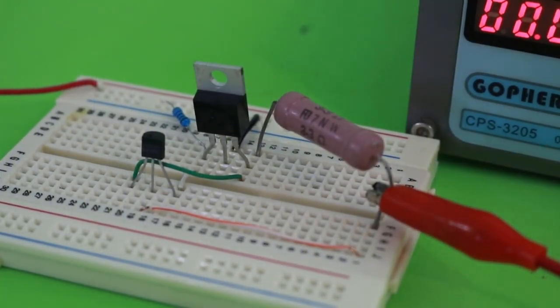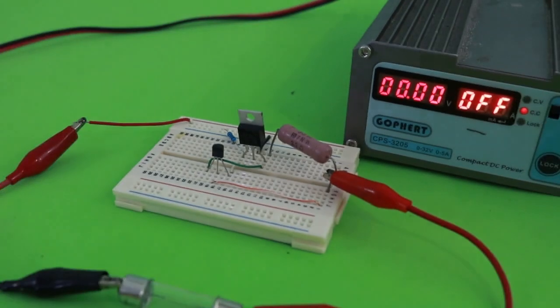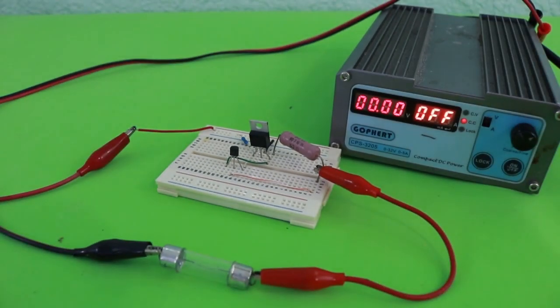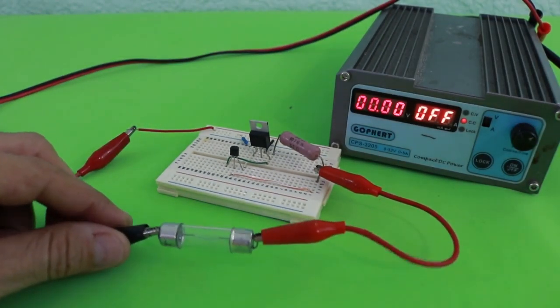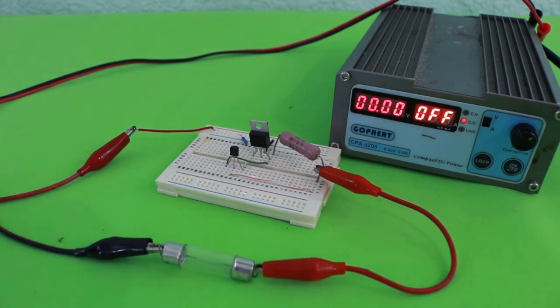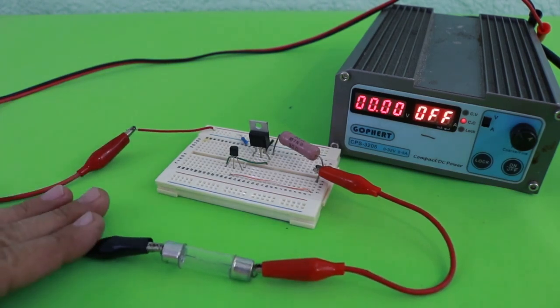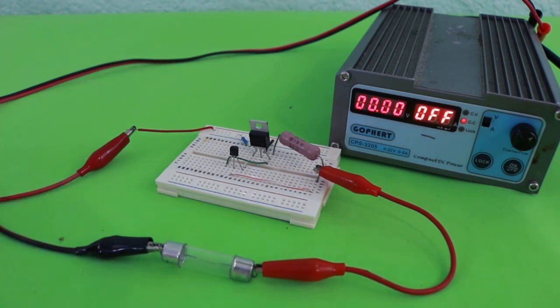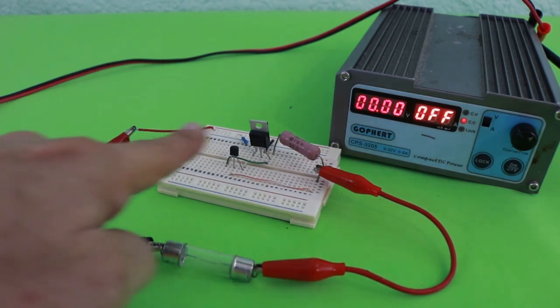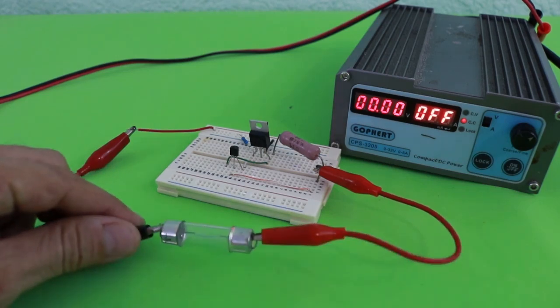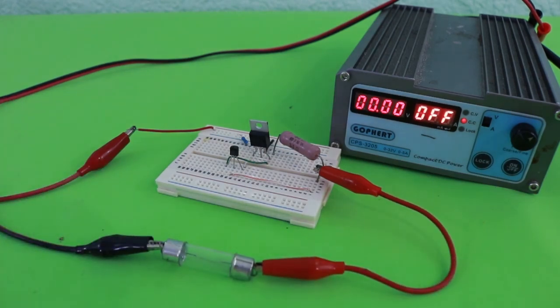Okay, here I have the circuit on breadboard, and I am using this incandescent lamp as a load to test the circuit. As you can see, here is the positive and negative of the power supply, and our circuit is just connected in series with the load. So, let's test it.